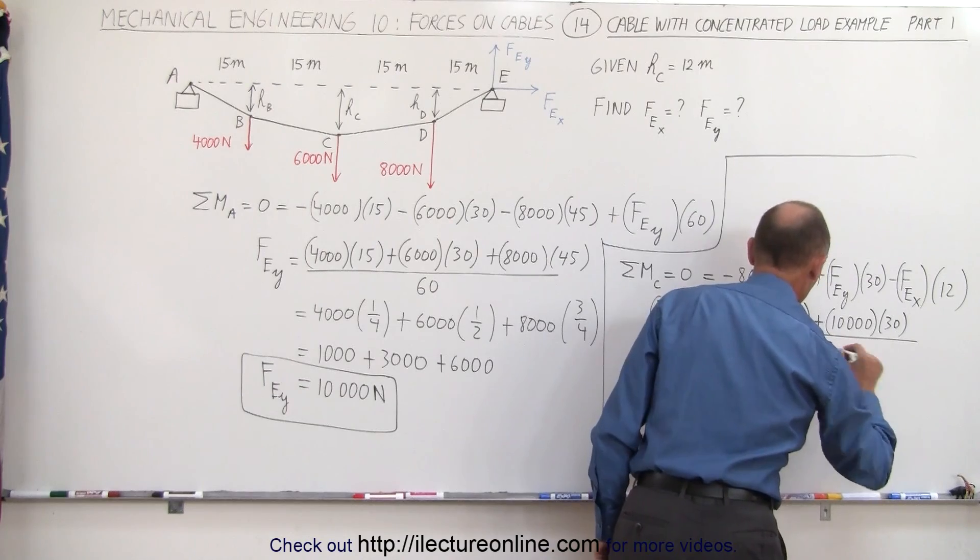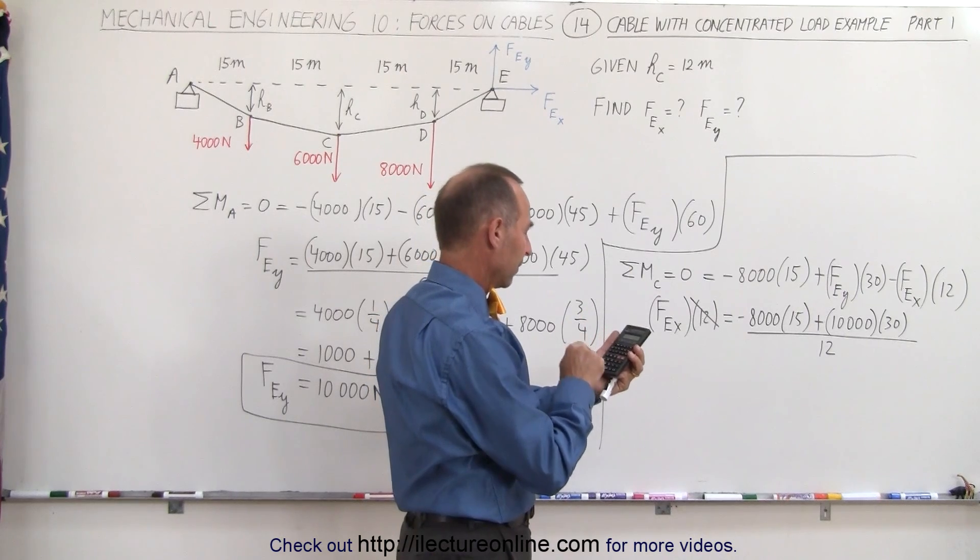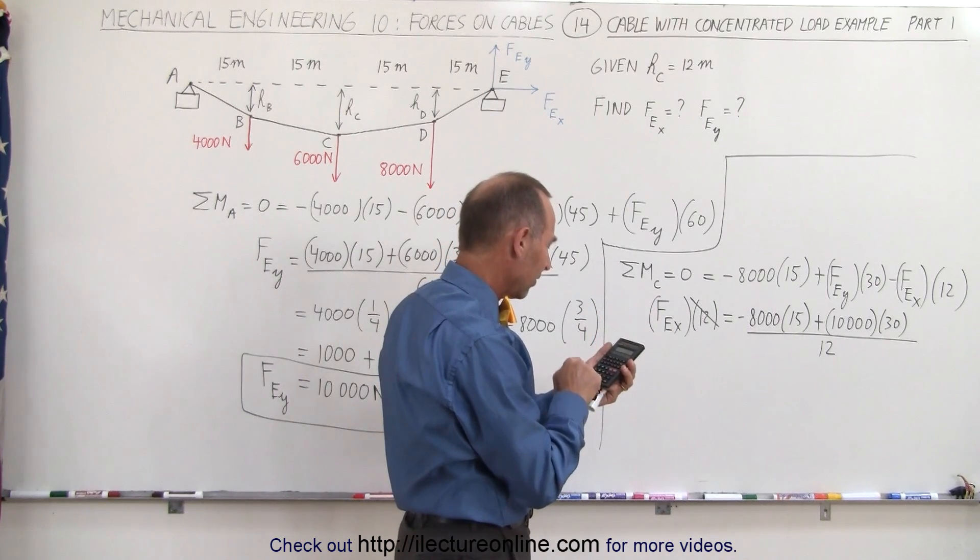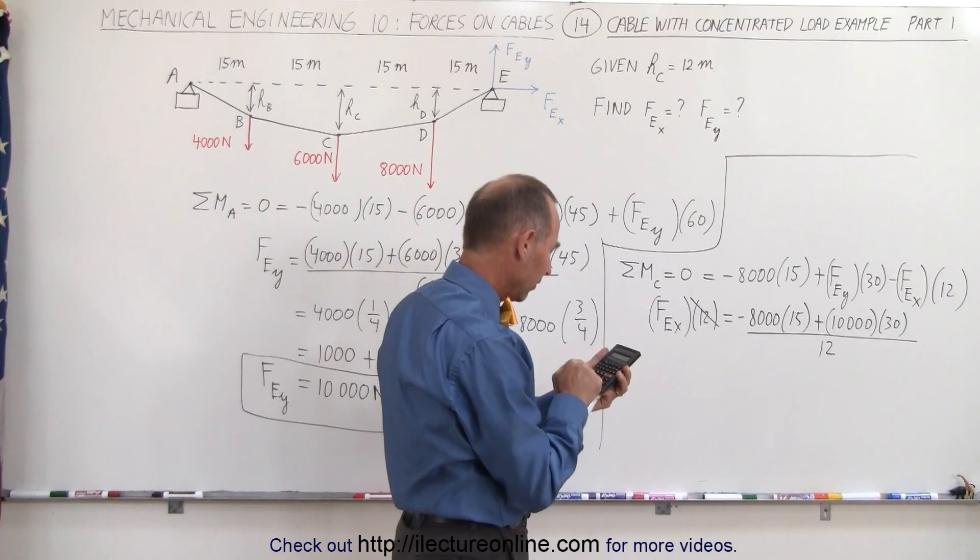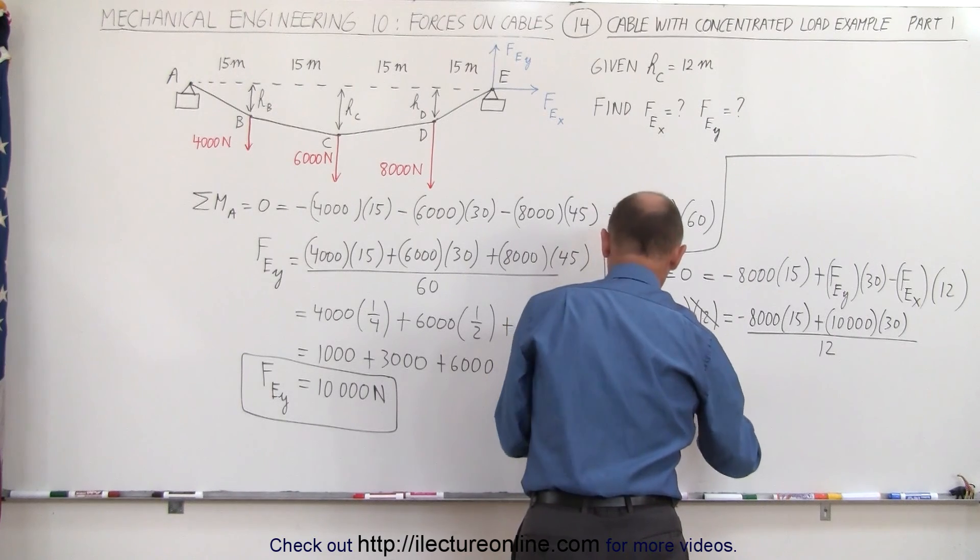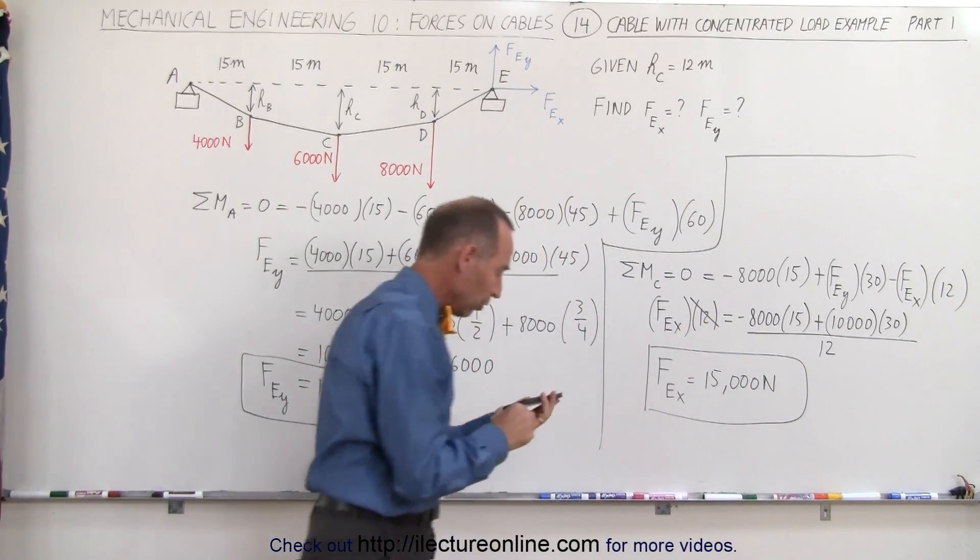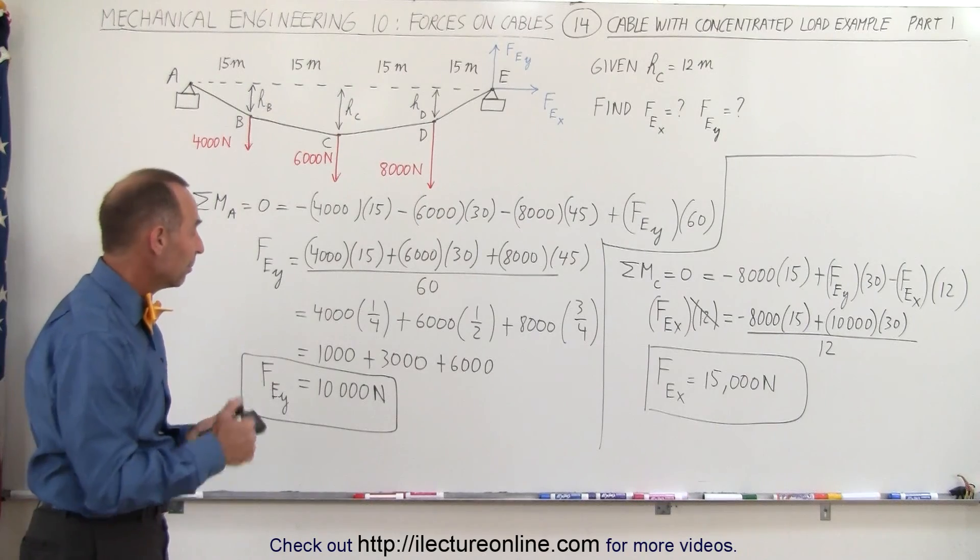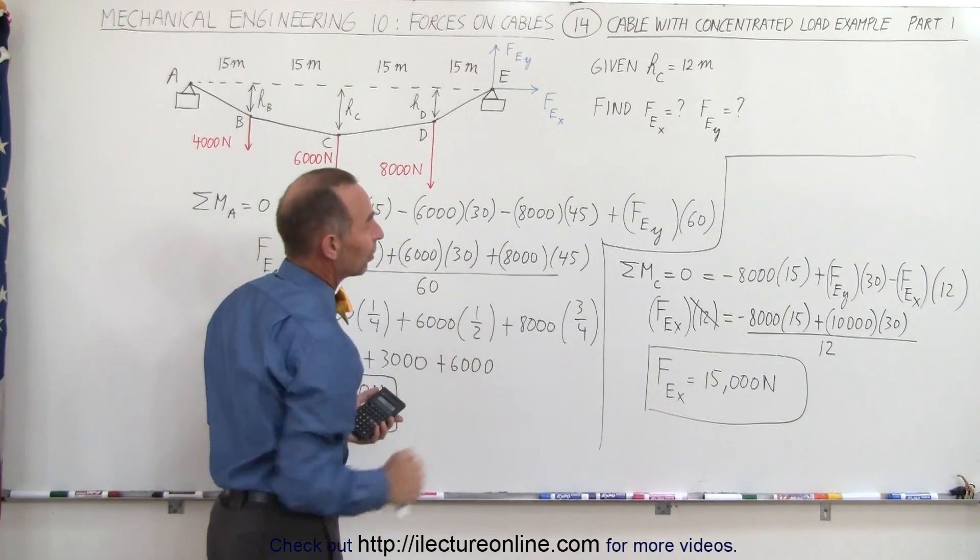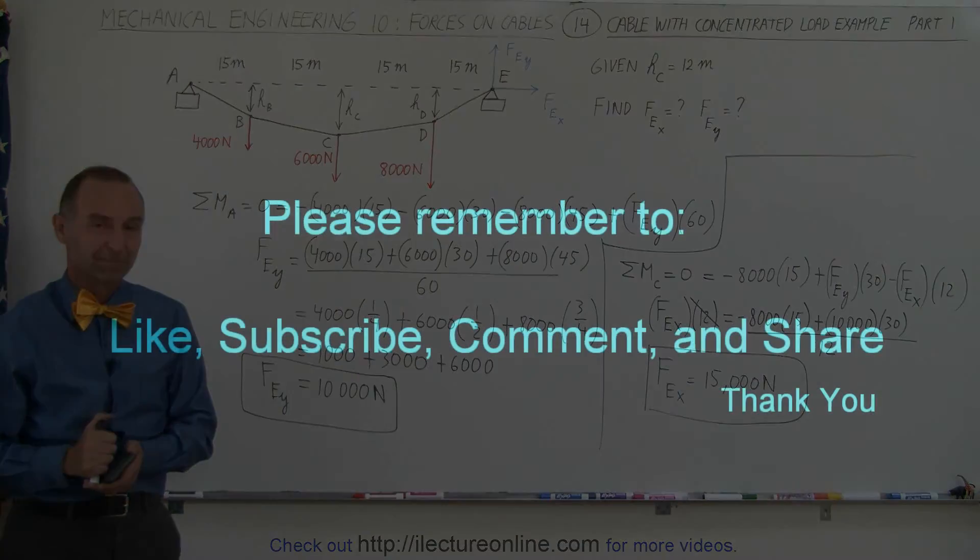Let's use a calculator this time. 8,000 times the negative times 15 plus 10,000 times 30, which is 300,000, and divide that by 12. We get the x component of the force at E that is equal to 15,000 newtons. And that is how we find the components of the support point at E, both in the y and the x direction. Of course, luckily they did give us this piece of information, otherwise we'd have trouble finding F_E_sub_x. That's how it's done.